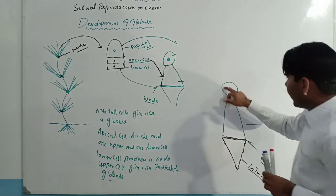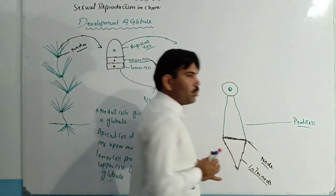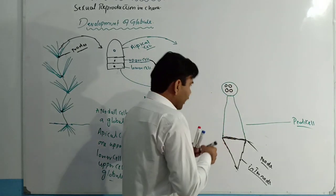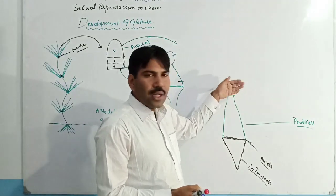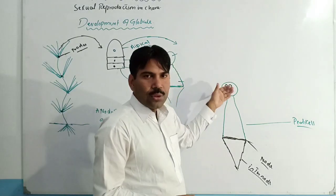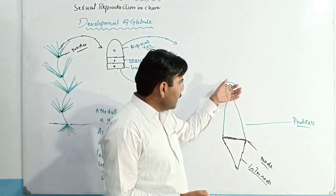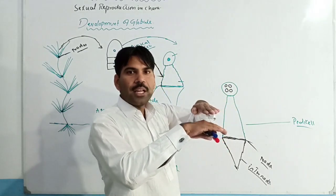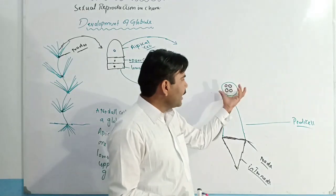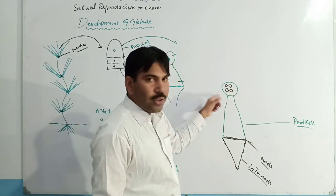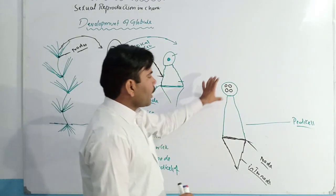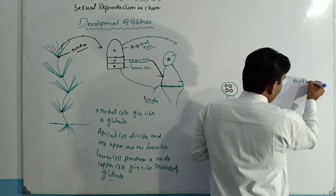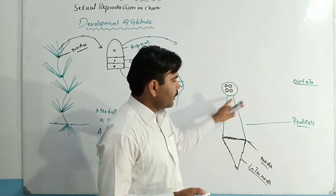This apical cell divides and produces eight cells — an octet. There are four cells visible and another four cells present on the lower side, so apparently four but actually eight cells are present. These eight cells are known as the octet, formed as a result of the division of this apical cell.